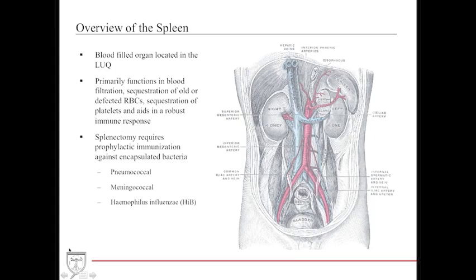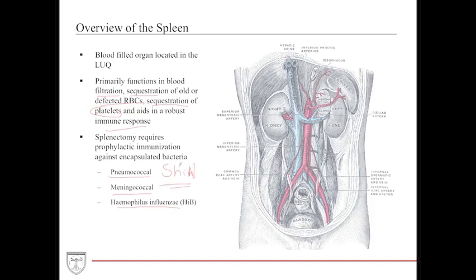The last organ in this unit is the spleen. The spleen is a small, blood-filled organ located in the left upper quadrant. It primarily functions in blood filtration, sequestration of old and defective red blood cells for destruction, sequestration of platelets, and robust immune response. It is especially important for proper destruction of encapsulated bacteria — remembered by the mnemonic SHIN: Streptococcus pneumoniae, Haemophilus influenzae, and Neisseria meningitidis. Following a splenectomy, prophylactic antibiotics and vaccinations against these three bacteria are required.